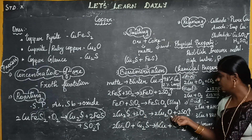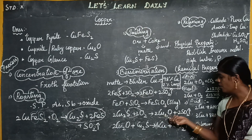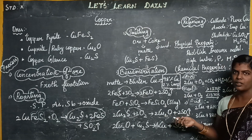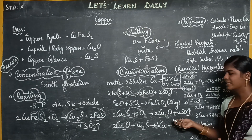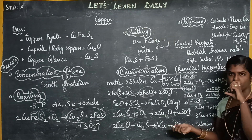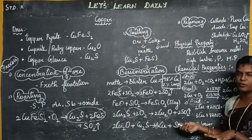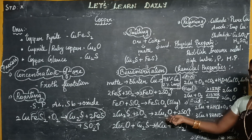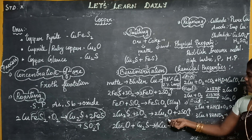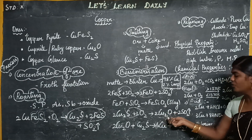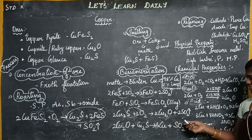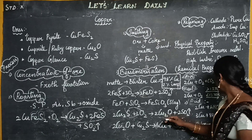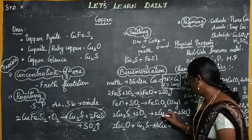This is Cu2O — copper one oxide. I already have the oxidation state. Of course, copper one and copper two oxides exist. Copper one oxide, okay. So next, before we show the transfer, let's try this.